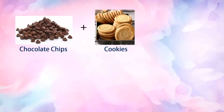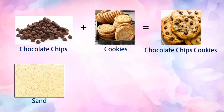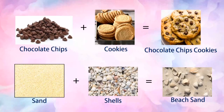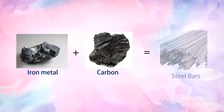4. Chocolate chips added in cookies produces chocolate chip cookies. 5. Sand and seashells are the components of beach sand. 6. Iron metal mixed with carbon are used in manufacturing steel bars.